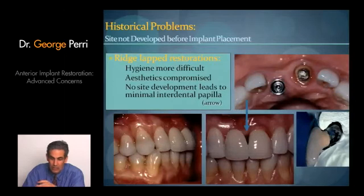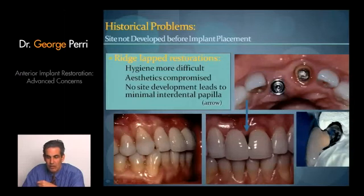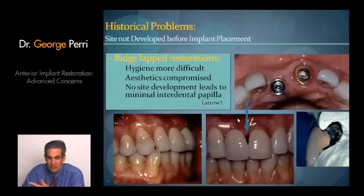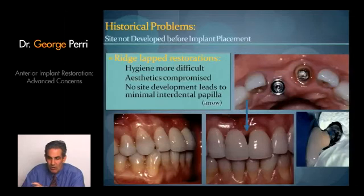We maintain bilateral symmetry and achieve the ability to close the space. The truth is, rarely do patients notice that the papilla isn't quite as tall, especially right at the midline — but they do notice a big black hole. The reason this is a challenge is that the implant was placed in the wrong spot; bone and soft tissue loss was ignored, and a restoration was attempted anyway.